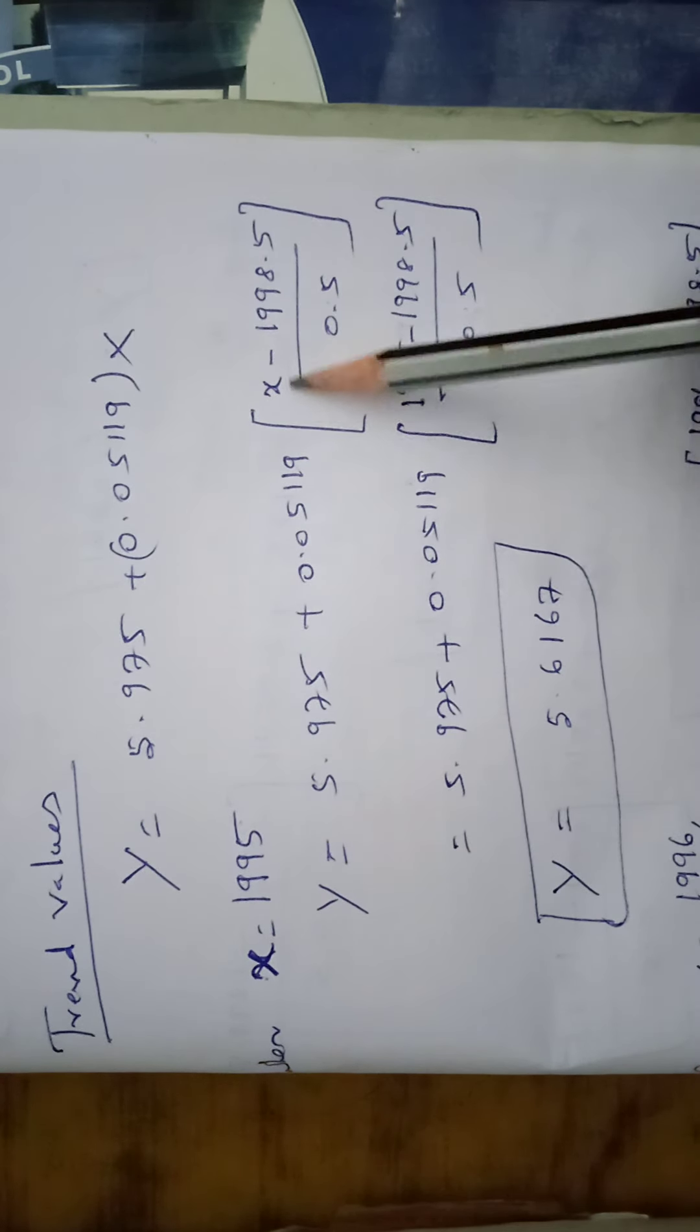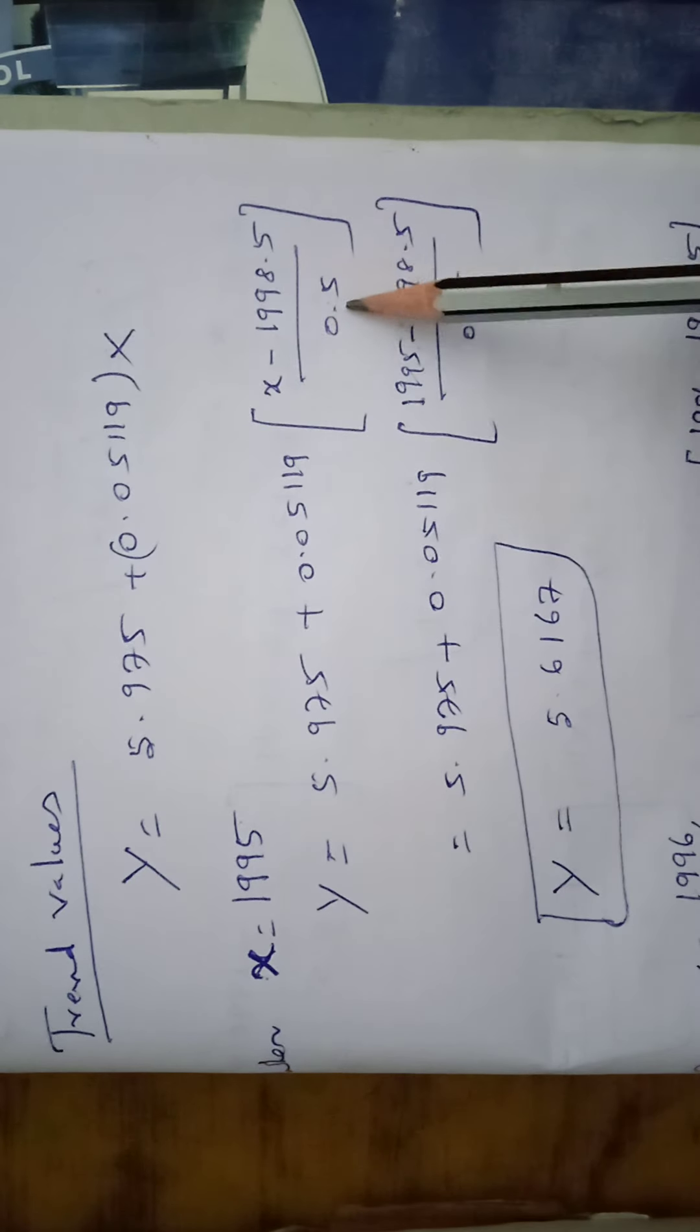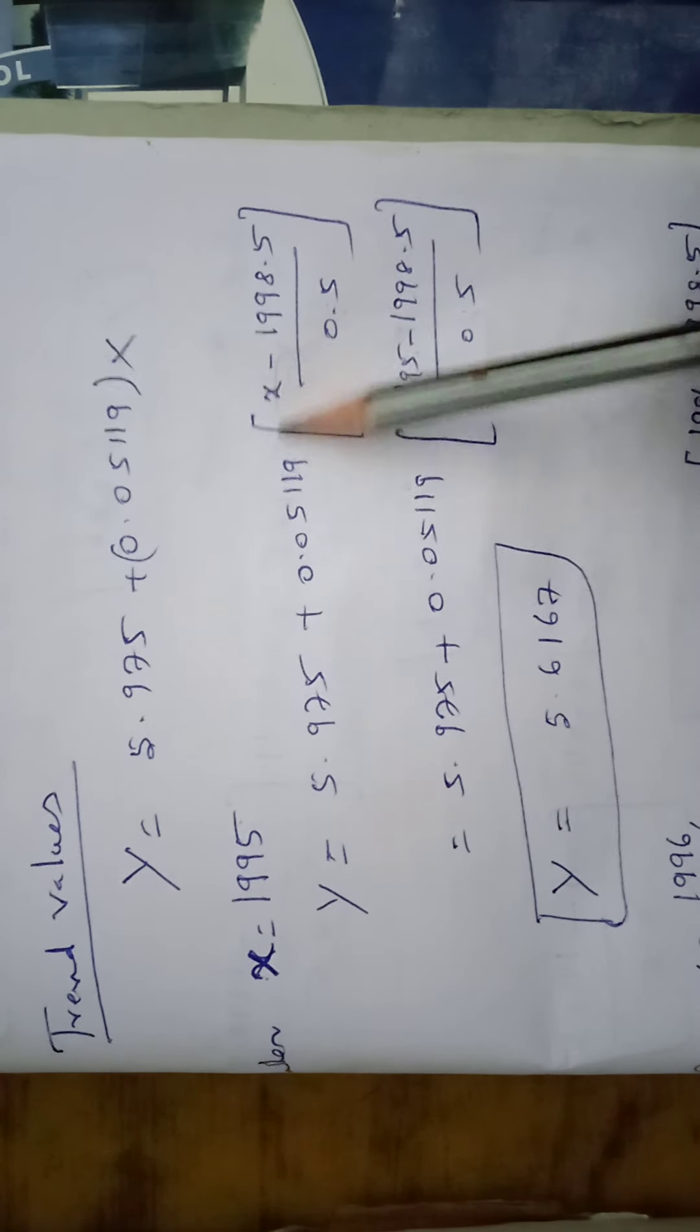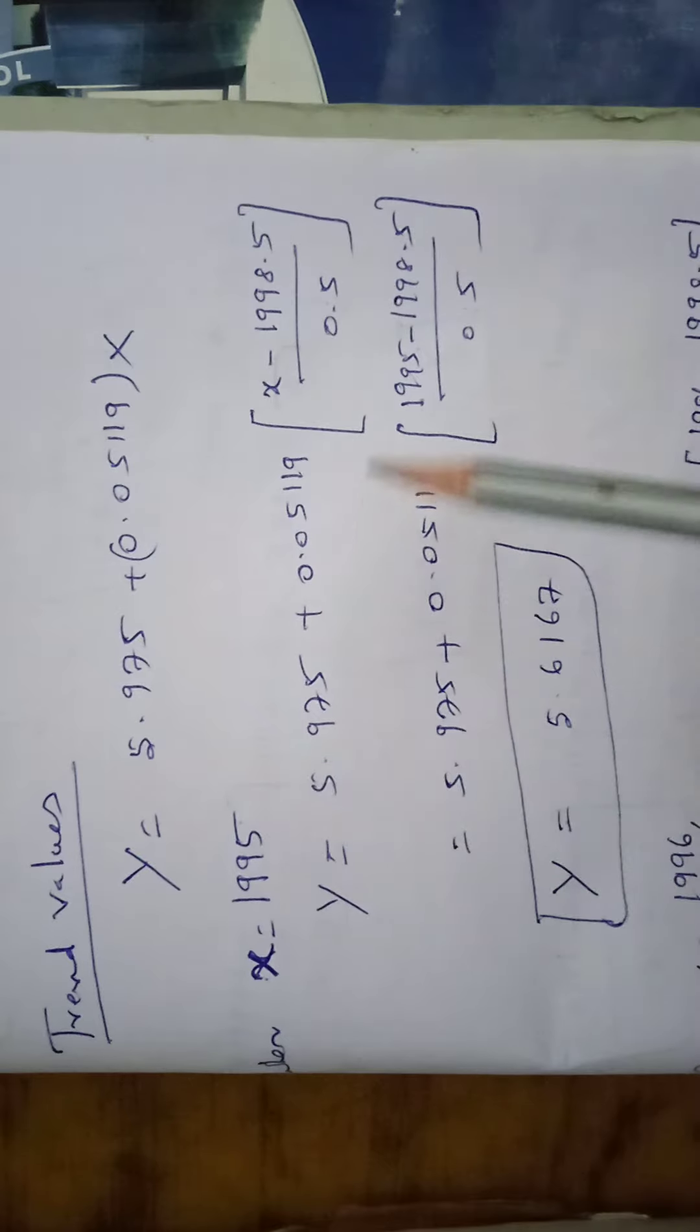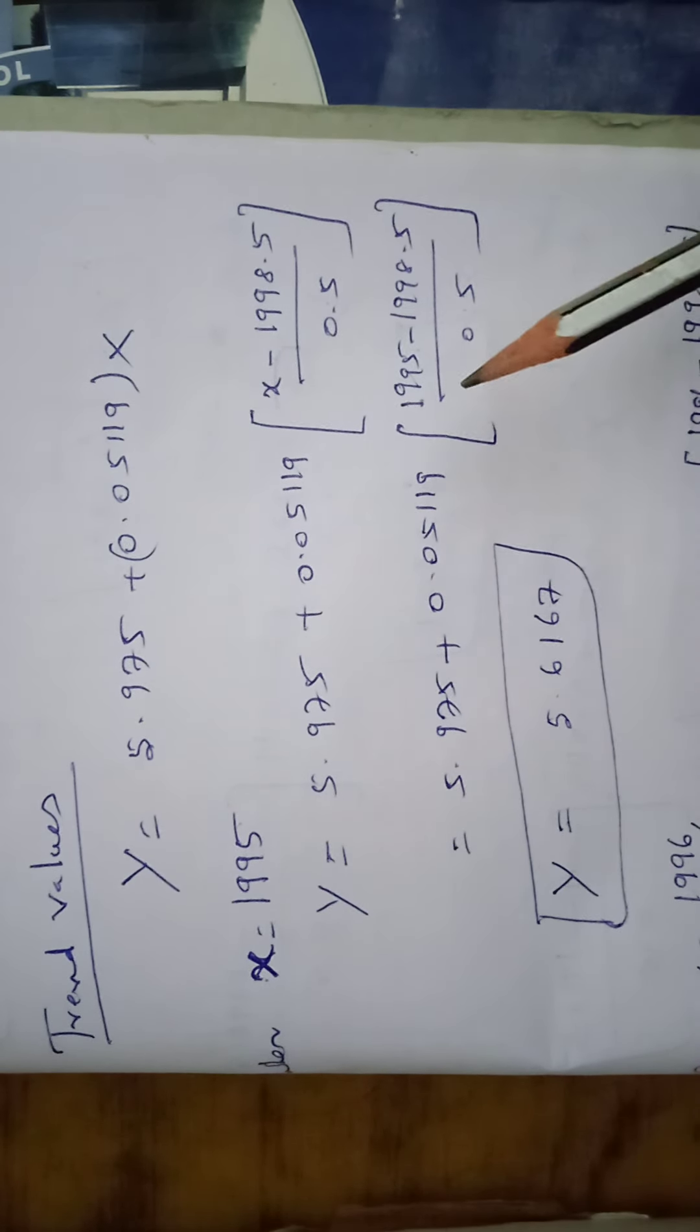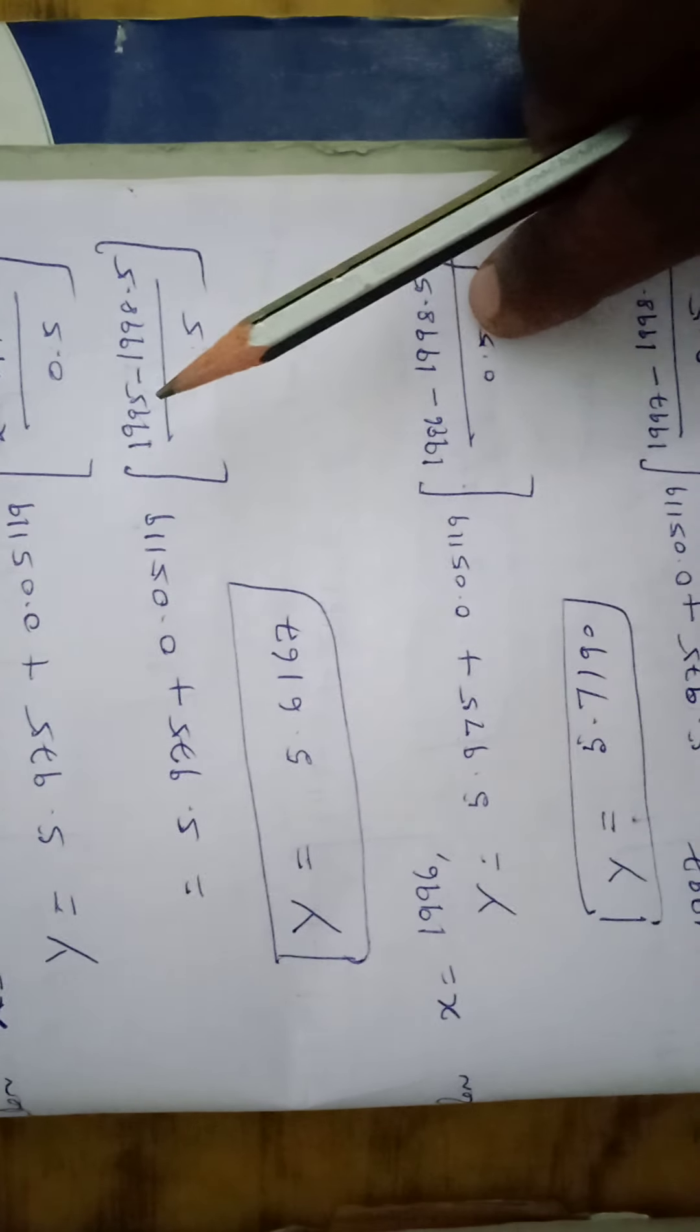X can be taken as formula X minus 1998.5 by 0.5. The X can be replacing by 1995. So next step the final answer is Y equal to 5.6167. Second year.